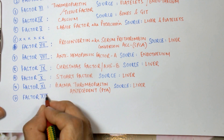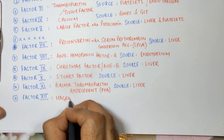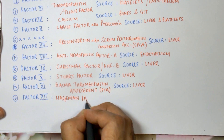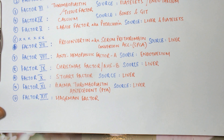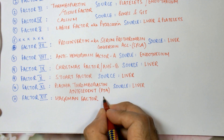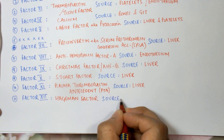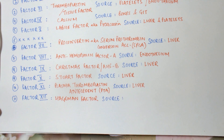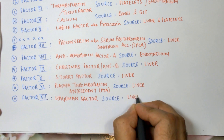Factor number twelve is also known as the Hageman factor. Factors 9, 11, and 12 are involved exclusively in the intrinsic pathway of blood coagulation. The source of the Hageman factor is also the liver.